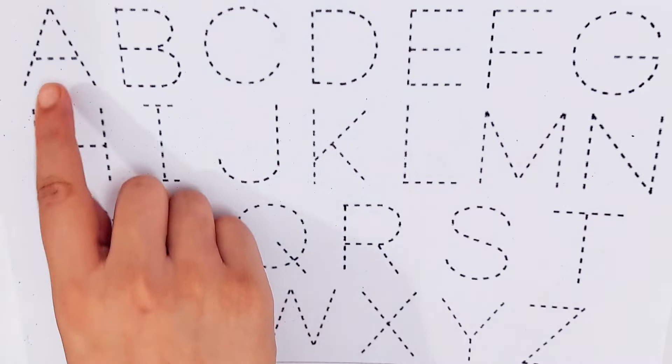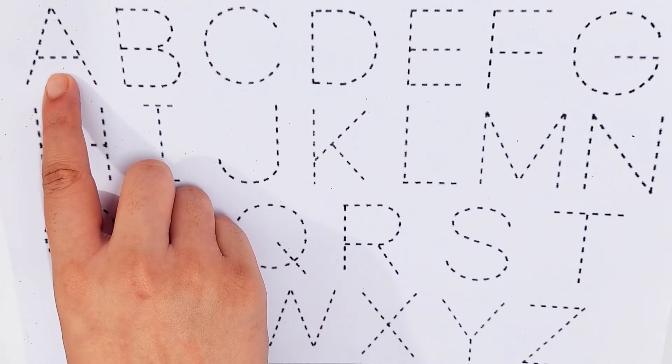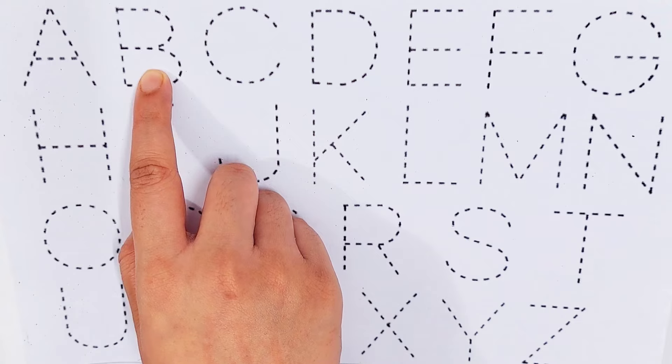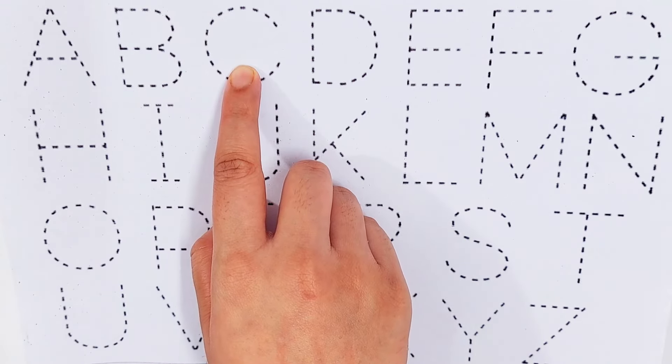Today we will learn some alphabets. A. A for Ant. B. B for Bus. C. C for Chocolate.